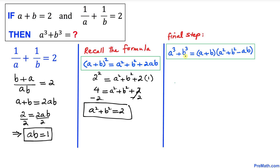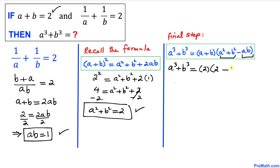Here's our final step. Let's calculate a³ plus b³ using the formula: a³ plus b³ equals (a plus b)(a² plus b² minus ab). Substituting: a plus b is 2, a² plus b² is 2, and ab is 1. So this becomes 2 times (2 minus 1), which is 2 times 1.